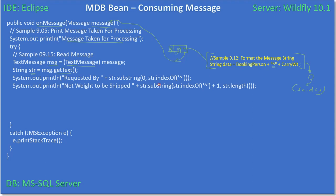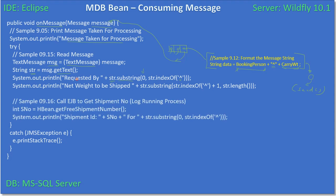Since our text message uses a caret symbol as a separator, we are making use of the substring function to find the index of the caret. Using substring from position 0 to that index gives us the booking person's name. Then from the caret position onward we take the cargo weight. Both pieces of data are printed to the system console: requested-by person name and net weight — how much weight the person wants to ship using this free shipping service.